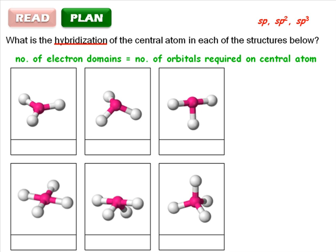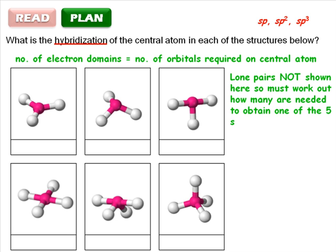Since the molecules do not indicate the lone pairs, you must work out how many are needed for the electron domains to correspond to one of the five basic shapes you've learned about.